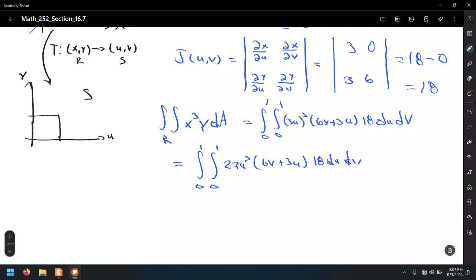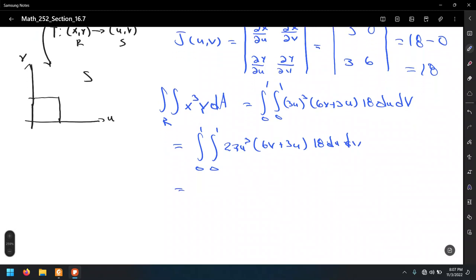Simplifying this should give us the integral from 0 to 1, from 0 to 1, 2916 u cubed v plus 1458 u to the 4th du dv.